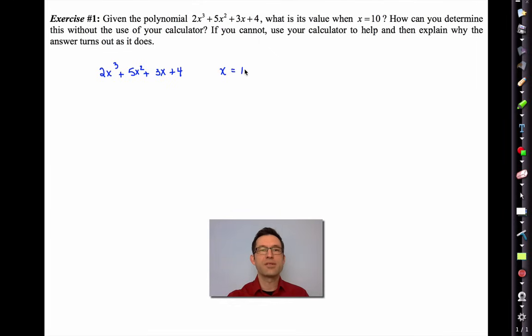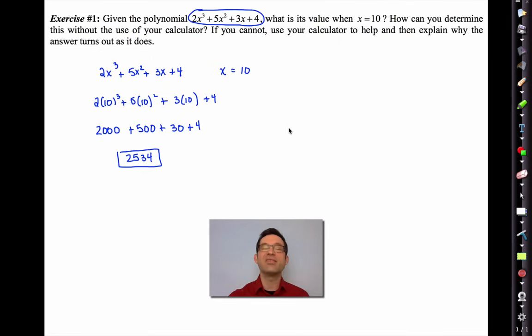When you put x equals 10 in, then what we really have here, 10³ by definition is a thousand. 5, or 10² by definition is 100, then multiplied by 5, and then obviously 30 and 4. So this is 2,534 when x is 10.